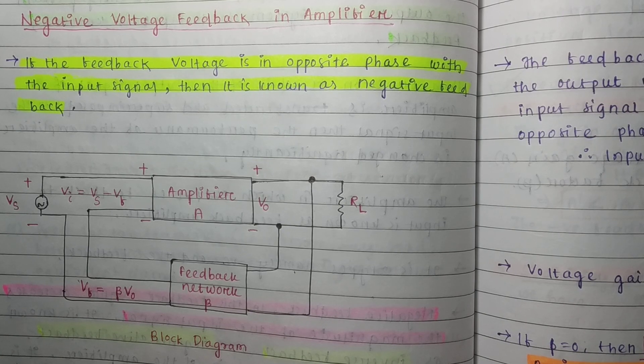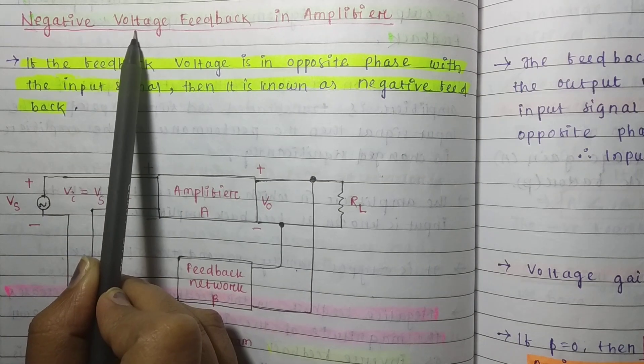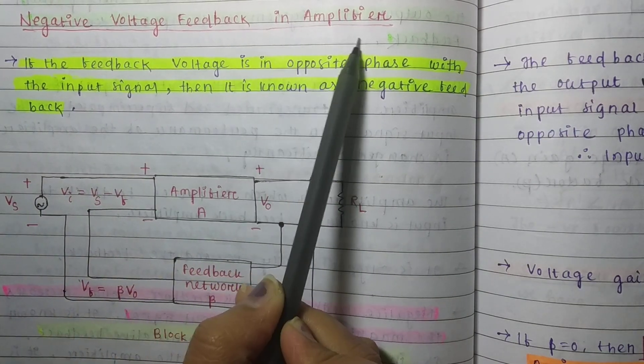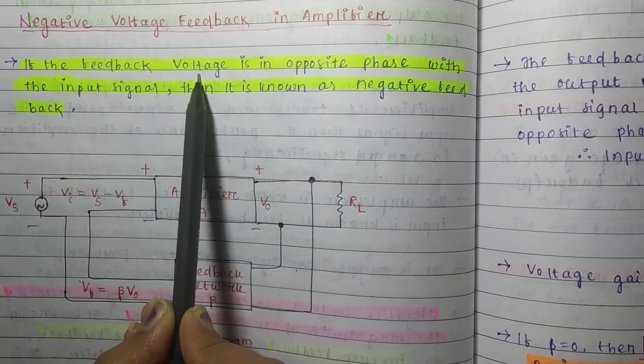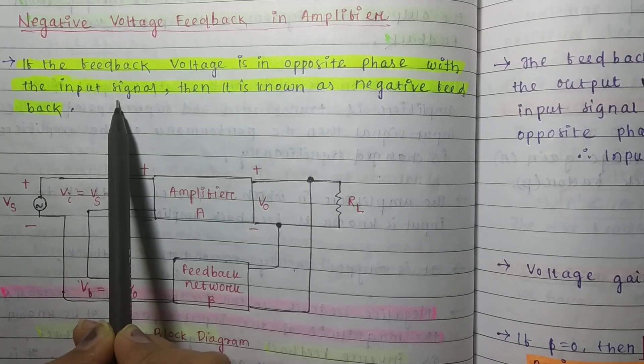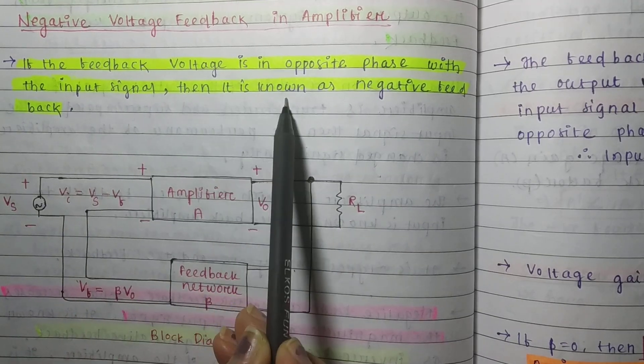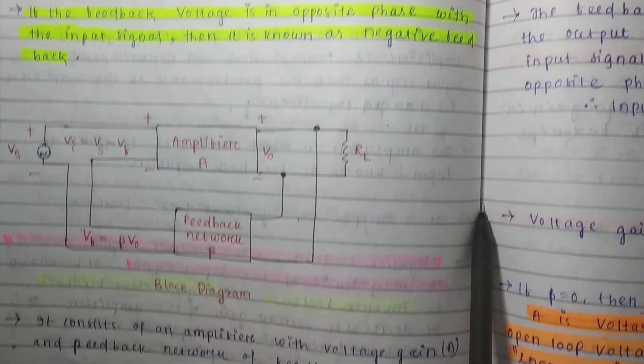Today we are going to study negative voltage feedback in amplifier. If the feedback voltage is in opposite phase with the input signal, then it is known as negative feedback. Here is the block diagram.